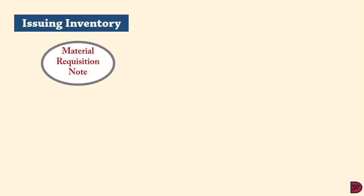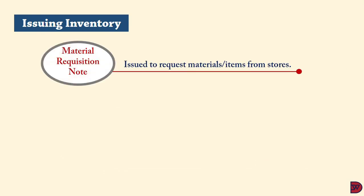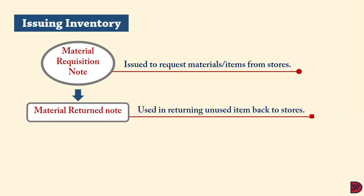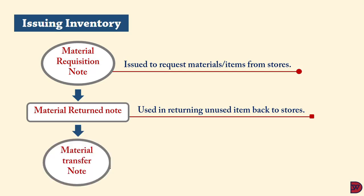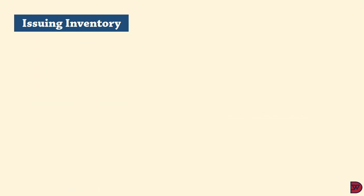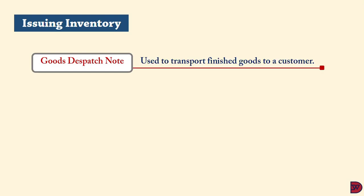When issuing inventory, the material department sends a material requisition note to the stores, which issues the requested material and updates their records. If there are any unused materials, the production department prepares a material return note and returns them to the stores. When one production department wants to transfer inventory to another, a material transfer note is prepared detailing the quantity and type. When finished goods are dispatched to a customer, a goods dispatch note is created to accompany the goods.